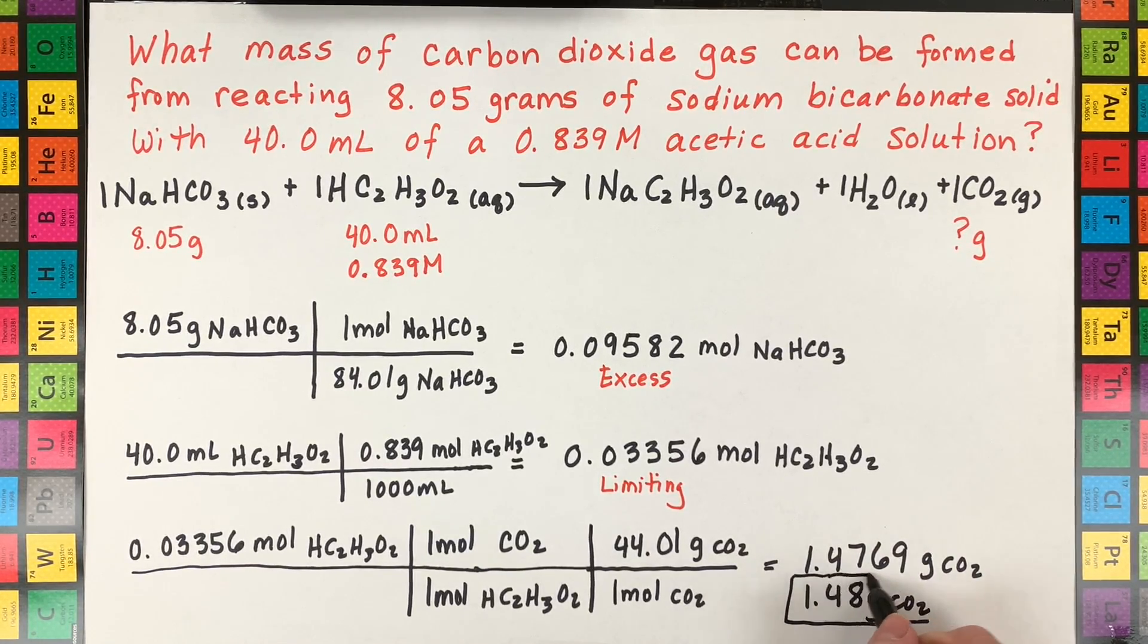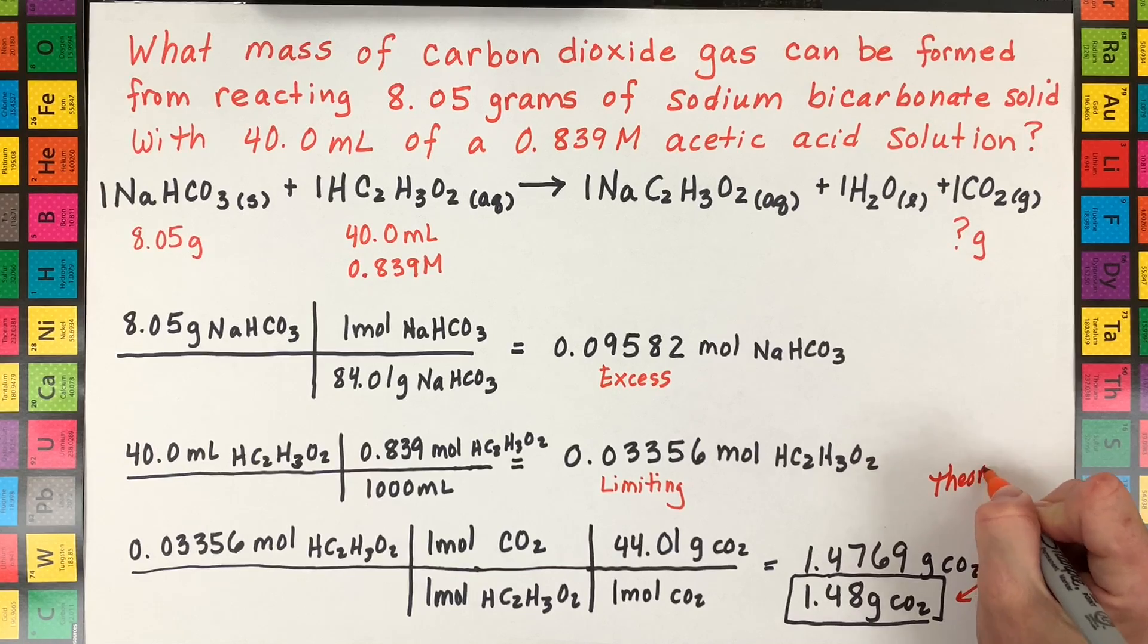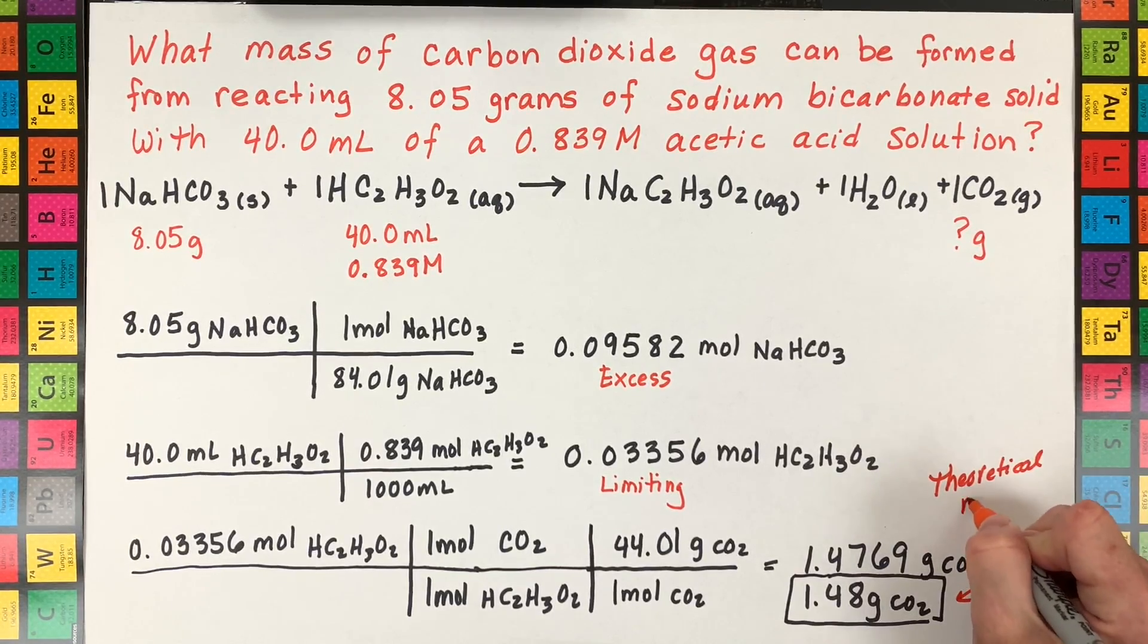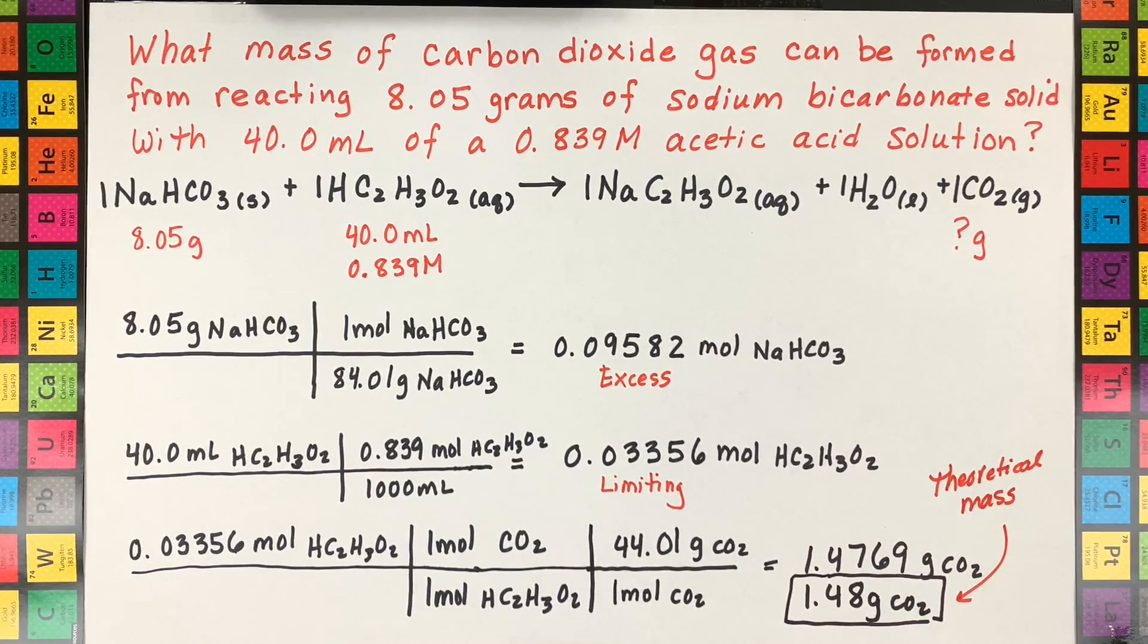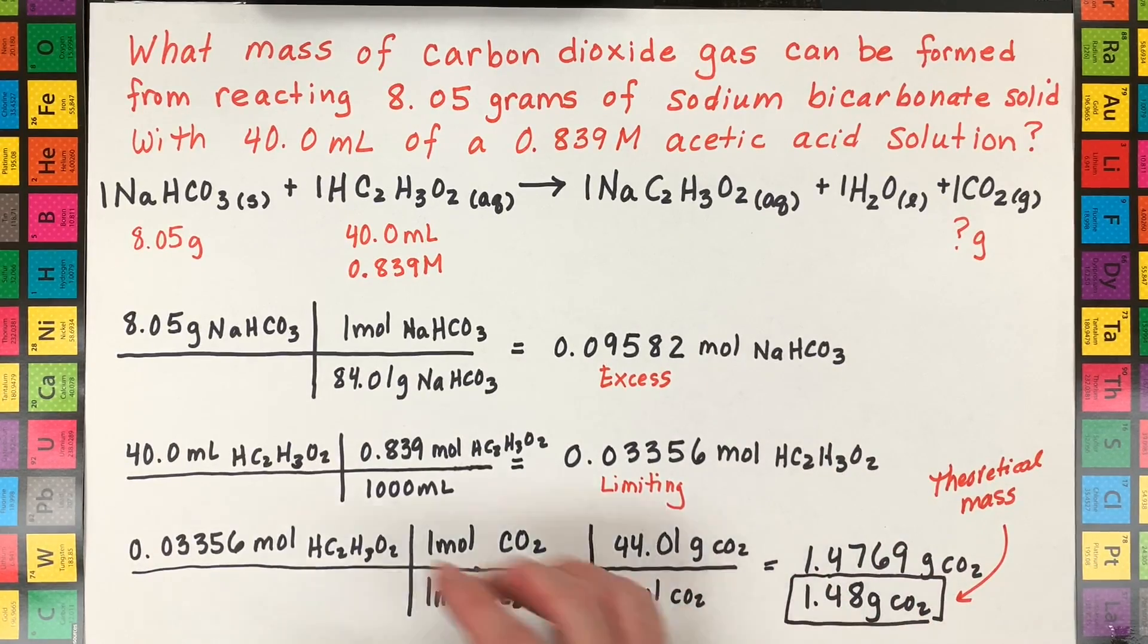So our theoretical mass that we should get would be around 1.48 grams of CO2. So again if you remember from your basic stoichiometry this is called the theoretical mass. And what we're going to do in the second part of this demo and experiment and problem, this solution stoic problem, is I'm going to calculate an experimental by doing the whole experiment again a little differently to give us a fairly predicted mass of the CO2 and then we'll run a percent error calculation.